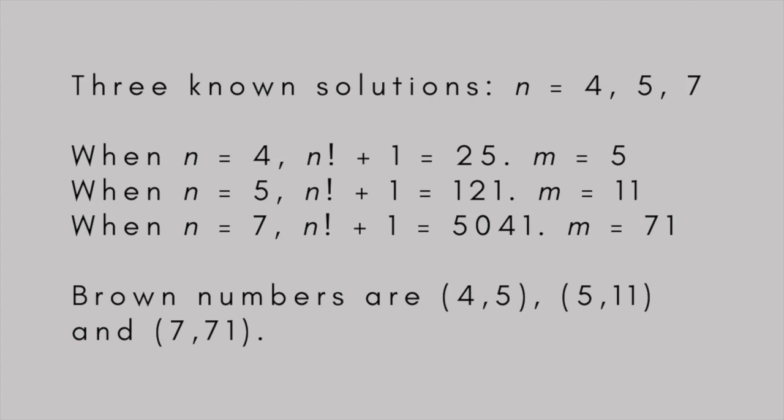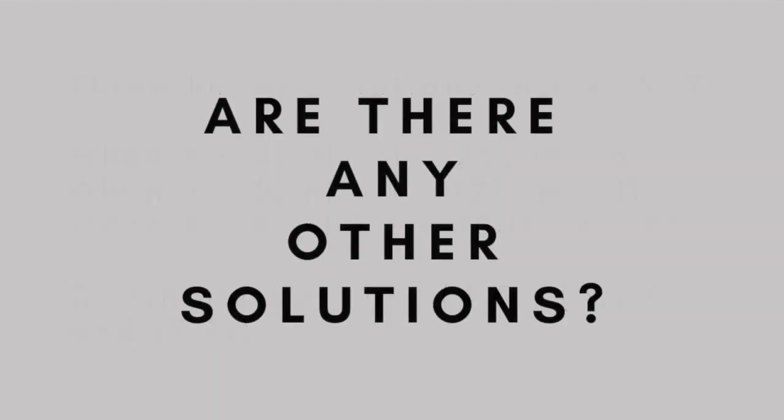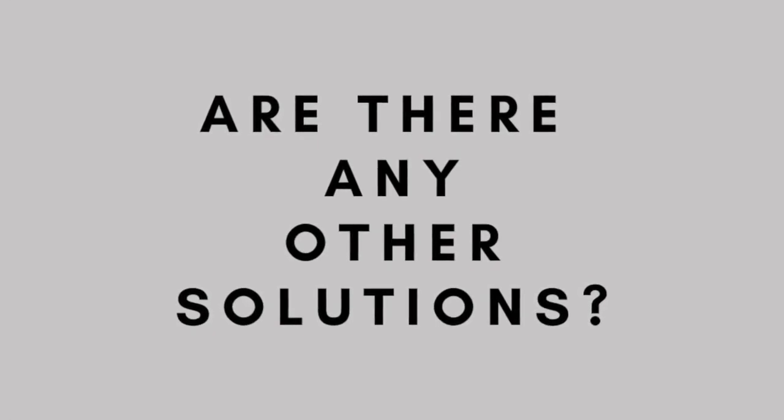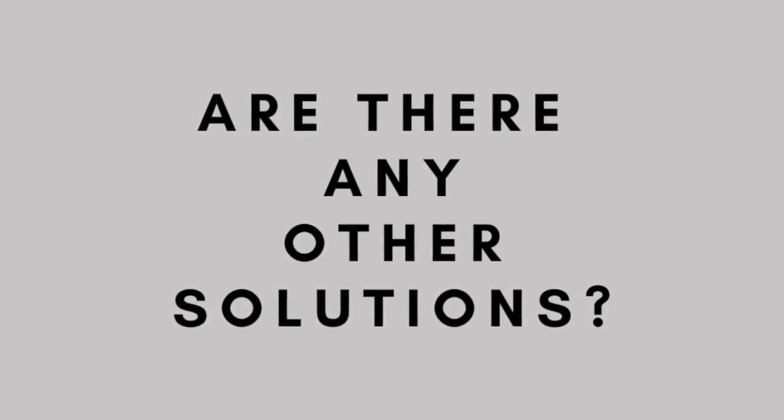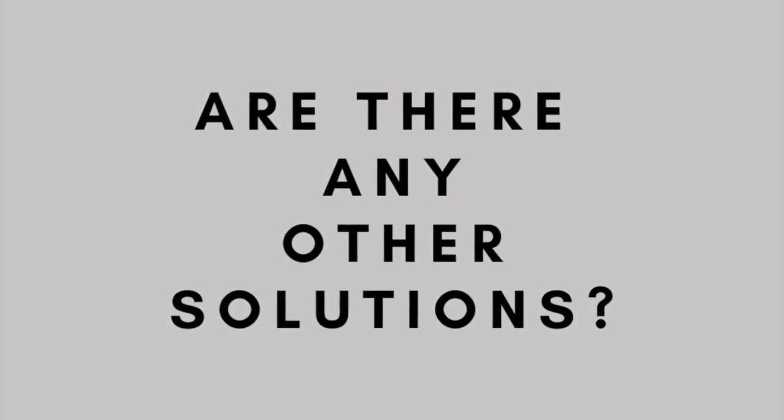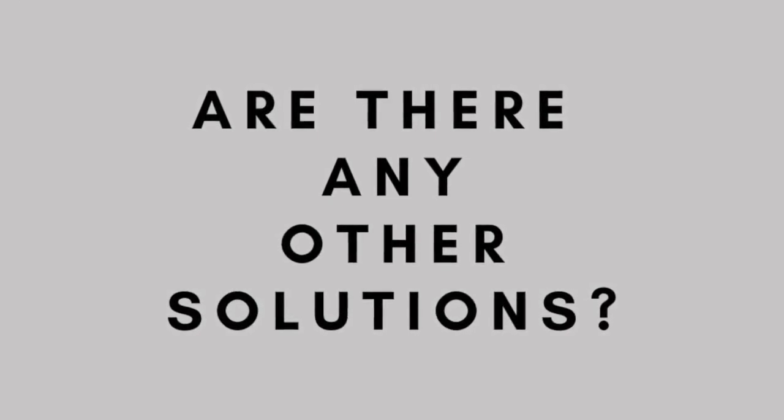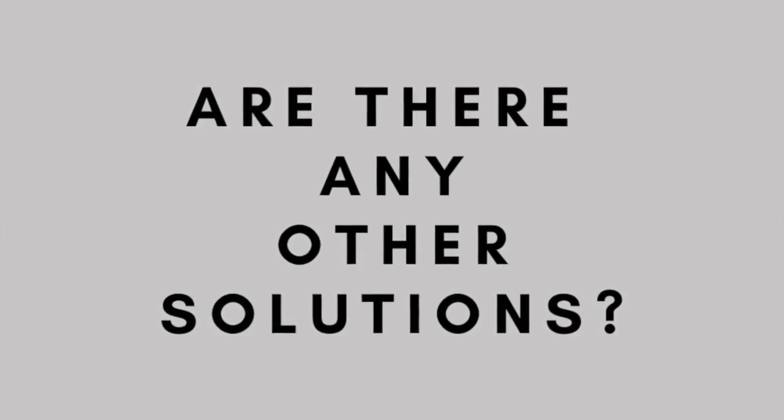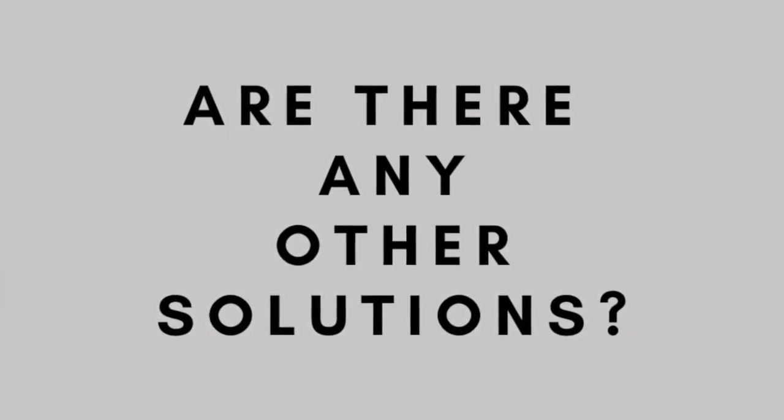It's an open question whether any other solutions to the Brocard problem exist. So, are there any other solutions? In other words, any other Brown numbers? The consensus among mathematicians is that there aren't. The prolific mathematician Paul Erdős has conjectured that there are no more solutions beyond the three already known.